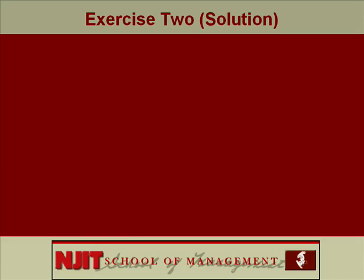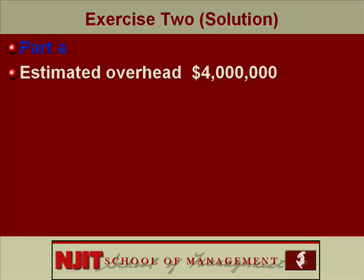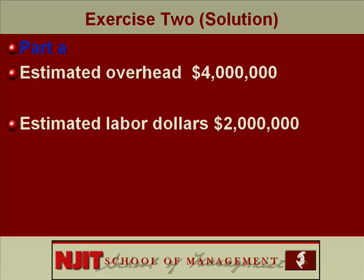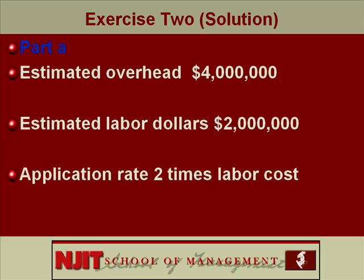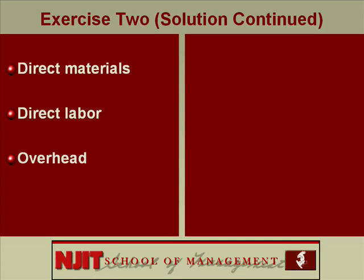Answer, Part A: the estimated overhead is $4 million. You decide to charge overhead using labor dollars. The estimated labor dollars is $2 million. So the application rate is overhead divided by labor dollars, which is 2. This means overhead is 200% of labor cost, or overhead would be around 2 times your labor cost. The cost of the job is material, labor, overhead.